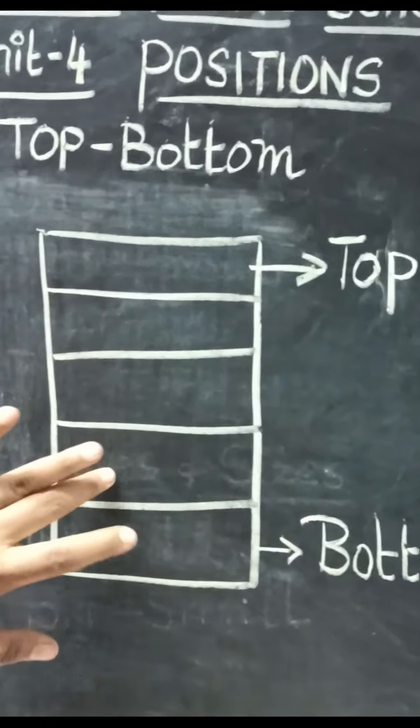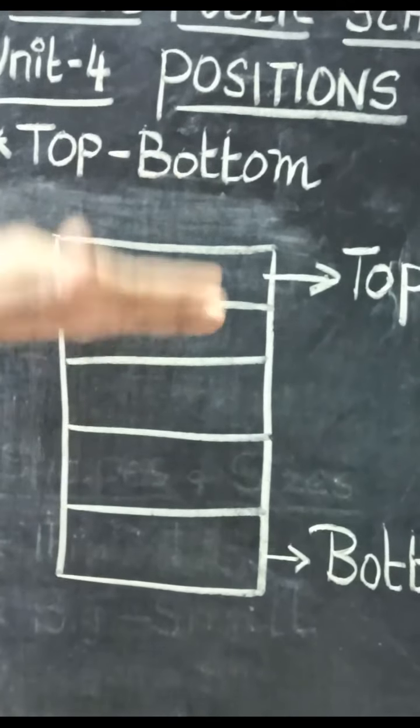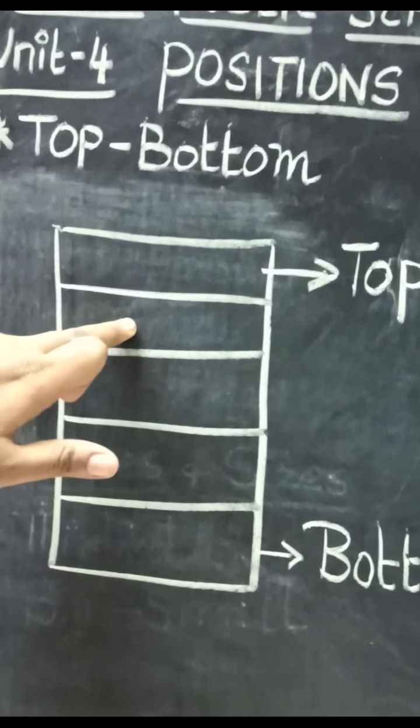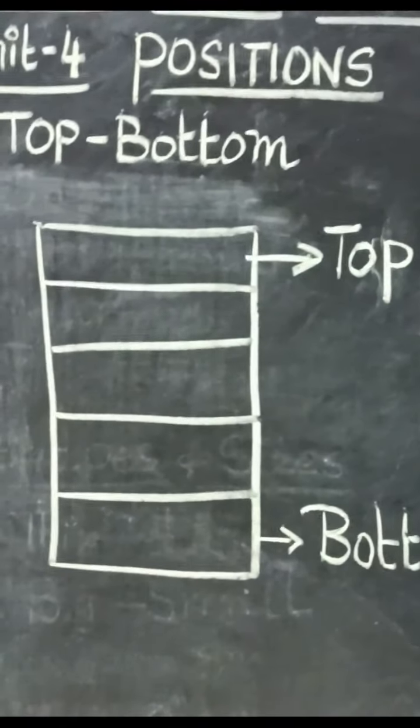1, 2, 3, 4, 5. So imagine it like floors - ground floor, first floor, second floor, third floor, fourth floor.